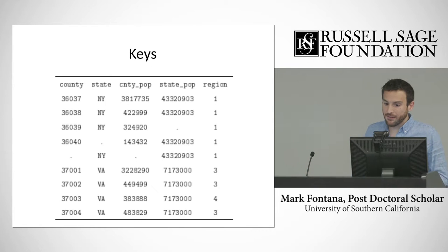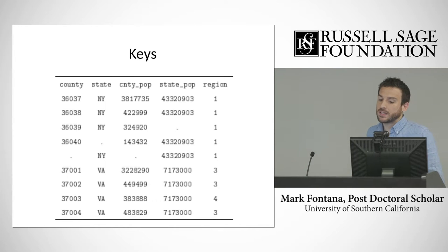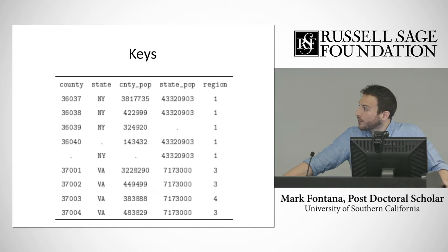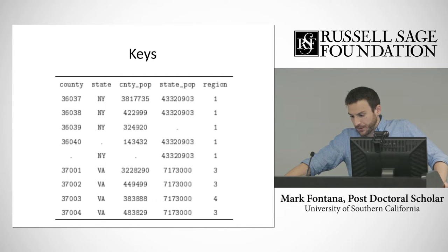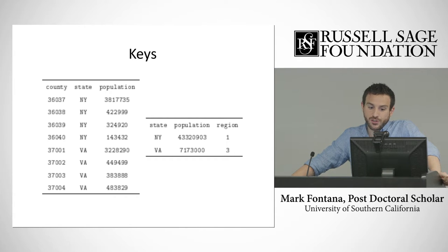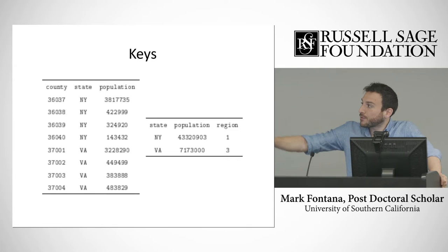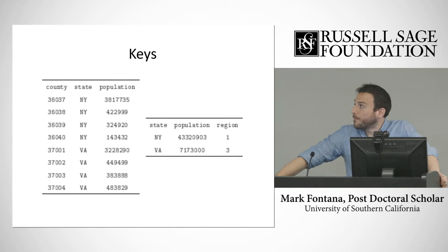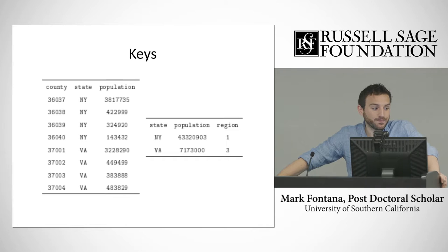The example they provide is: imagine you have this bit of data listing county, state, county population, state population, and a regional identifier. Stored this way, there's some missing data and it's not clear what the lines with missing data correspond to. But if we take seriously the notion of storing these in normalized tables, we would store them in something that looks more like two linked tables where it's clear that each state in the left set corresponds to a particular row in the right set, removing ambiguity. It's a silly example, but it underscores the point.